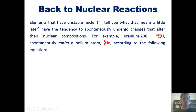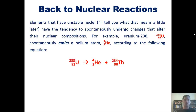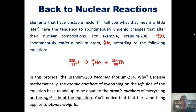Elements that have unstable nuclei have the tendency to spontaneously undergo changes that alter their nuclear compositions. For example, uranium-238 spontaneously emits or gives off a helium atom according to this equation. As you look at this equation closely, you can see that the uranium atom, as it gives off this helium atom, becomes or transforms into thorium-234. The reason is because mathematically, the atomic numbers of everything on the left side of the equation have to add up to equal the atomic numbers on the right side. This also applies to their atomic weights.